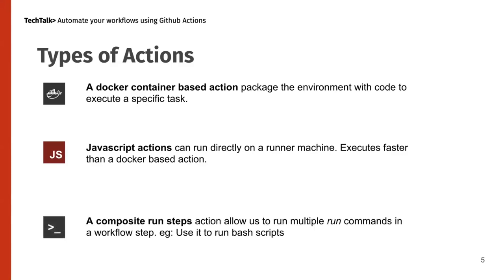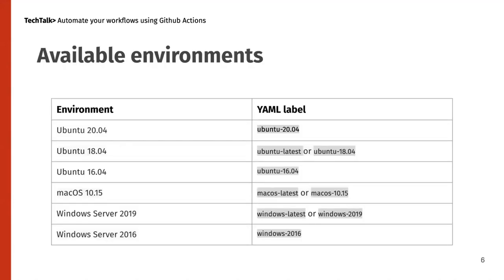The next type of action is composite run steps, where you can perform various commands — for example, if you want to run a bash script, you can specify a run command. As for available environments, we have Ubuntu, macOS, and Windows. When you run your workflow, you can choose which operating system to use. For example, if you want Ubuntu 18.04, you can specify the label 'ubuntu-latest'.